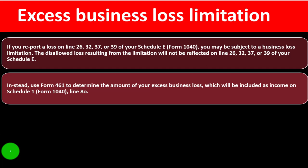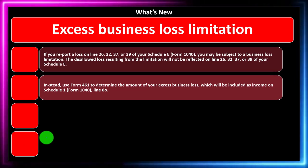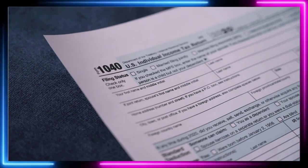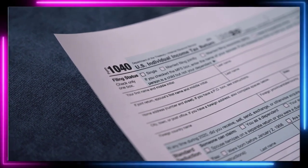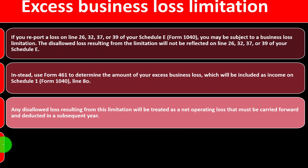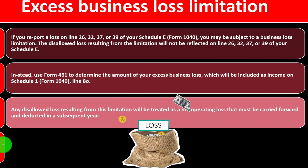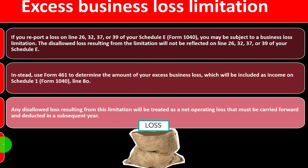So the loss would flow into Form 1040 Schedule 1 and then to the 1040, appearing in the income area as a reduction of income. Any disallowed loss resulting from this limitation will be treated as a net operating loss that must be carried forward and deducted in a subsequent year. So the question is: if I don't get the loss today, can I carry it into the future and take it against other income at some later point?